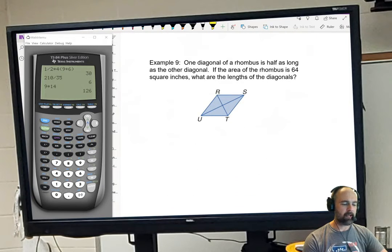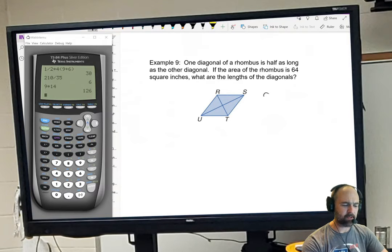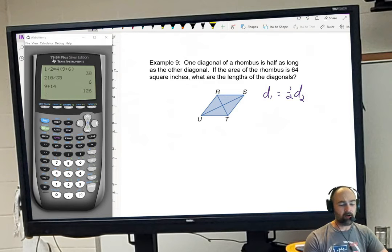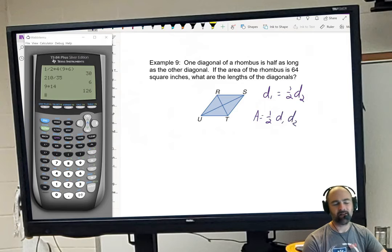Last example. One diagonal of a rhombus is half as long as the other diagonal. So I'm just going to go ahead and say this: diagonal 1 is going to equal one half of diagonal 2. Okay. So if the area of the rhombus is 64, well let's see. 64 is equal to, well you know what, let me write the entire formula out. Area equals one half d1 d2. Now let's plug in what we know.